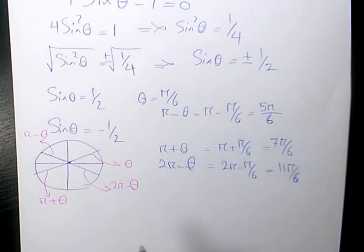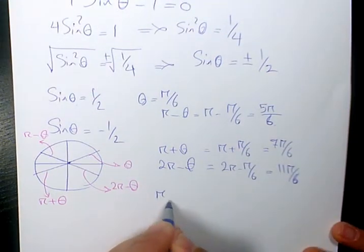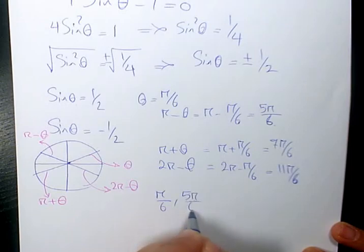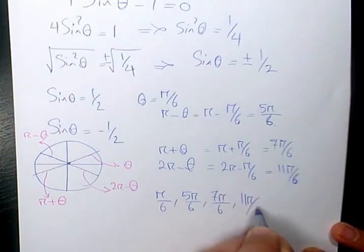So these four answers are going to be the answer to this question: pi over 6, 5 pi over 6, 7 pi over 6, 11 pi over 6. These are the final answer.